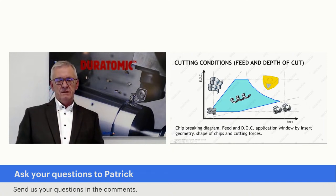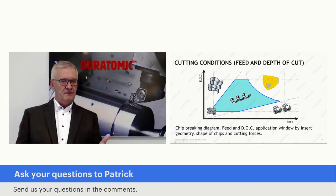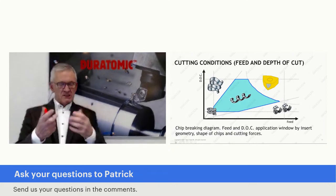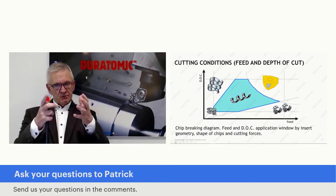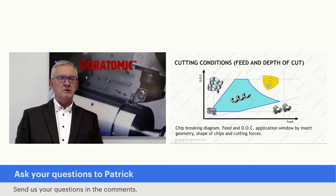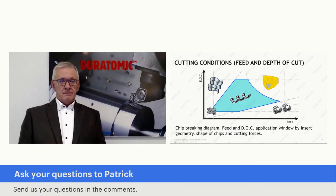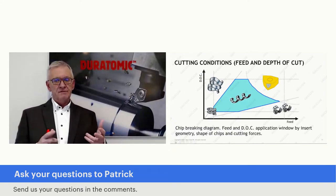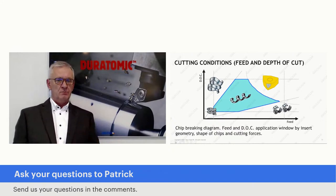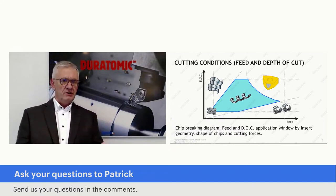I use this mainly for educational purposes, to let people understand some principles. You see basically five windows here. Up left: big depths of cut combined with rather low feeds — that's the domain of the long chips, the ribbon chips, things we like to avoid, because these things will stop your machines and endanger your operators. So that first window is something you prefer not to be in. The second window, upper right, is what I sometimes call the window of the broken tools. If you combine feeds and depths of cut which are too high, you are going to overload the cutting edges. And if you overload cutting edges, you break them.